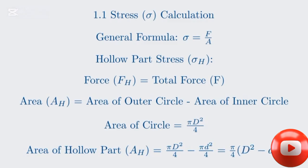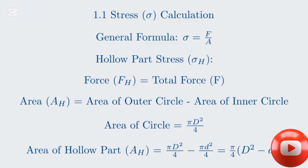Now we can write the full formula for the stress in the hollow part. The stress in the hollow section, sigma H, is equal to the force F divided by pi over 4 times the quantity D squared minus d squared. This is equivalent to 4F divided by pi times the quantity D squared minus d squared. Let's plug in our values and calculate the result.